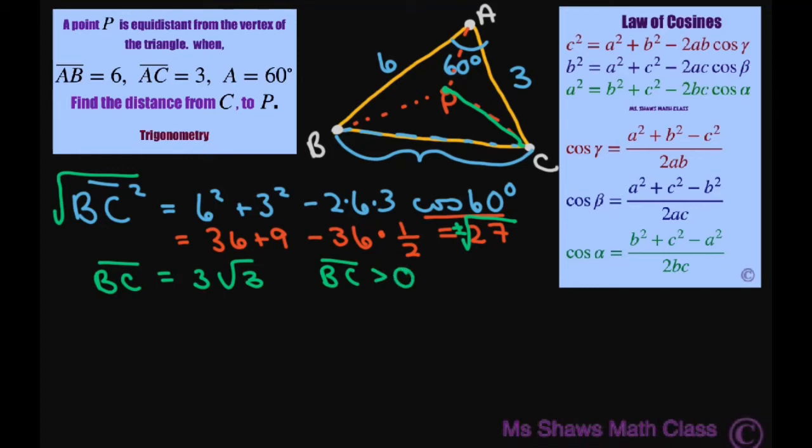Now since P, if we drew a circle around here like this, P would be the center of a circumscribed circle.